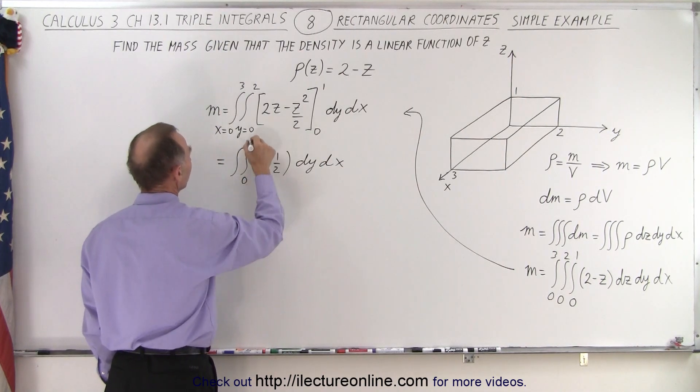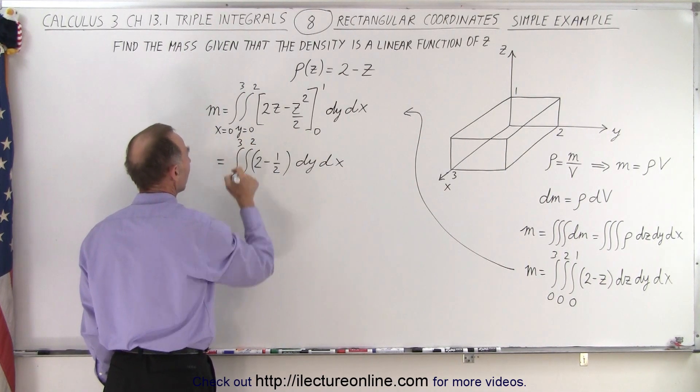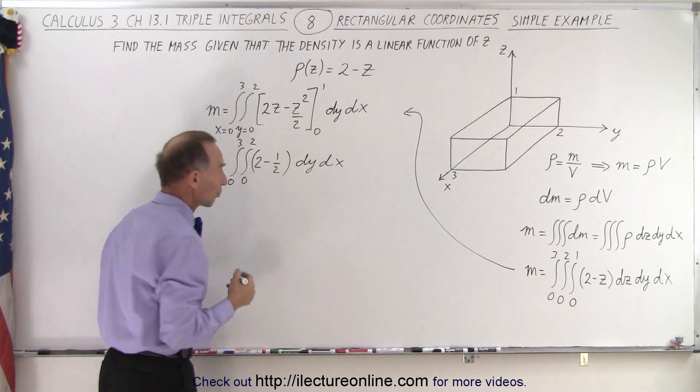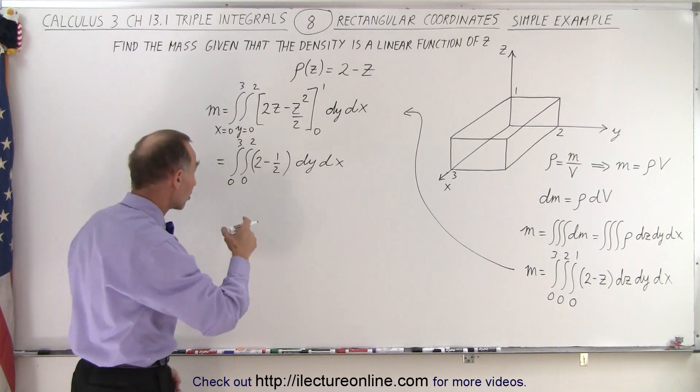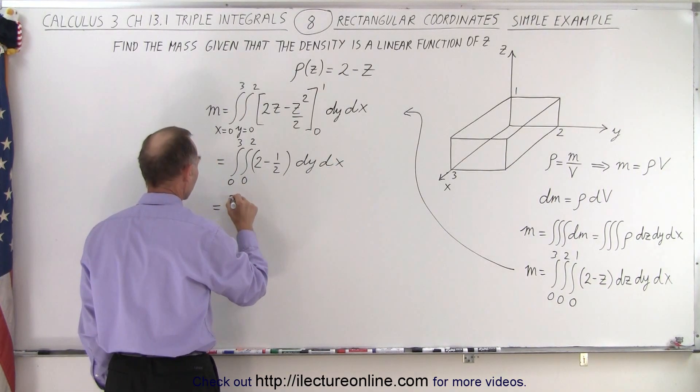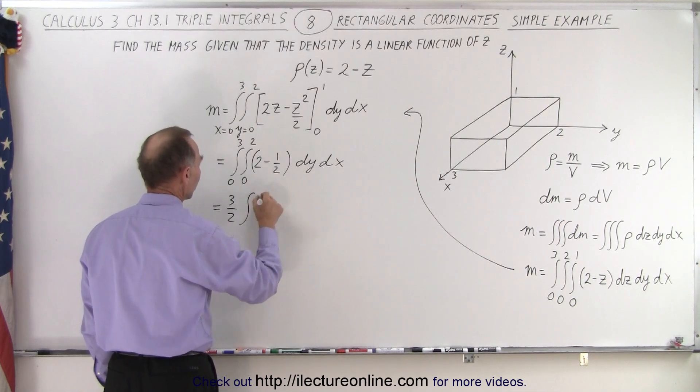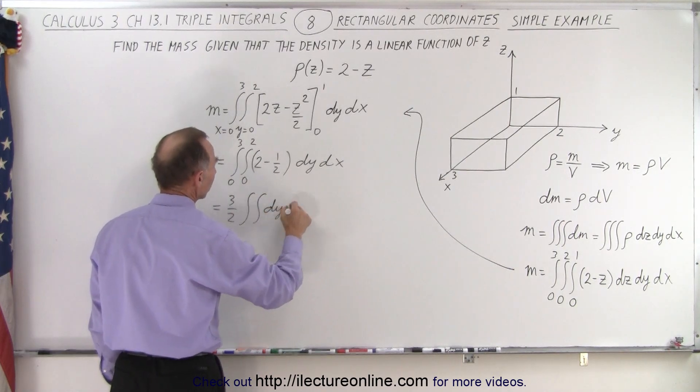The limit of integration is 0 to 2 and 0 to 3. And so this becomes 1 and 1 half or 3 halves, and that's a constant which can come outside the integral sign. So this is equal to 3 halves times the double integral of dy dx.